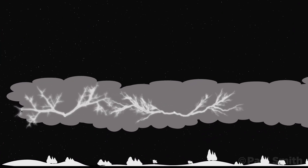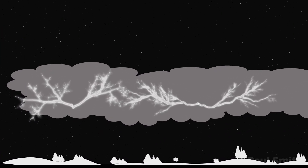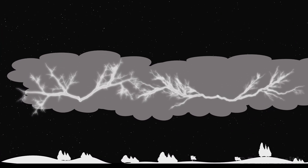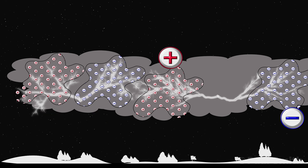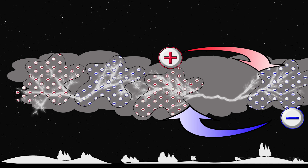Sprites usually happen over really strong thunderstorm complexes, and in these complexes there's a lot of charge being transferred around, as you can see in the intracloud lightning. They can be really complex areas of different charges all through these big thunderstorm systems, which lead to big intracloud flashes between positive and negative areas of the clouds.